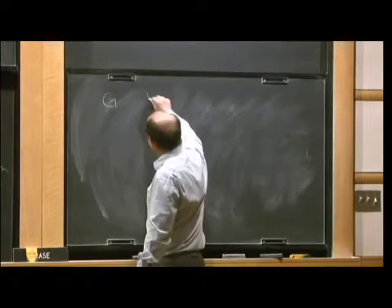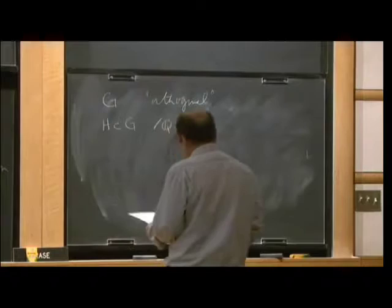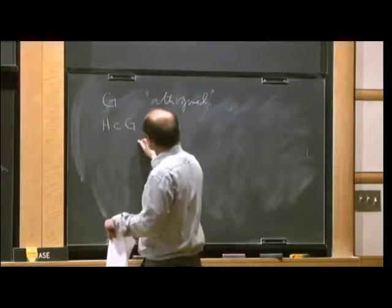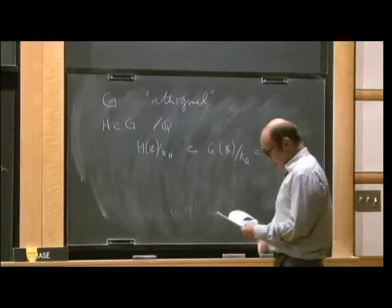So we have our group G of the specified type, an orthogonal group. And I assume that I have a subgroup H of Q. And I choose maximal compact subgroup, so I get the corresponding injection of symmetric spaces. So I have H over KH. This is H of R, which is embedded in G of R over KG.